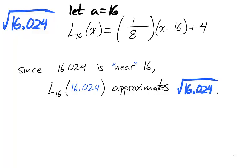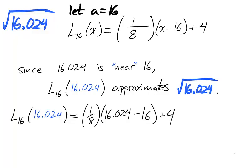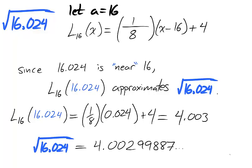Notice that 16 and 16.024 are very close, so we should expect that the square root of 16.024 can be approximated by the linearization. We plug 16.024 into our linearization, subtract, divide 0.024 by 8 and get 0.003, to which we add 4. Our linearization anticipates a value of 4.003 for the square root of 16.024, which happens to have an actual value very close to 4.003.